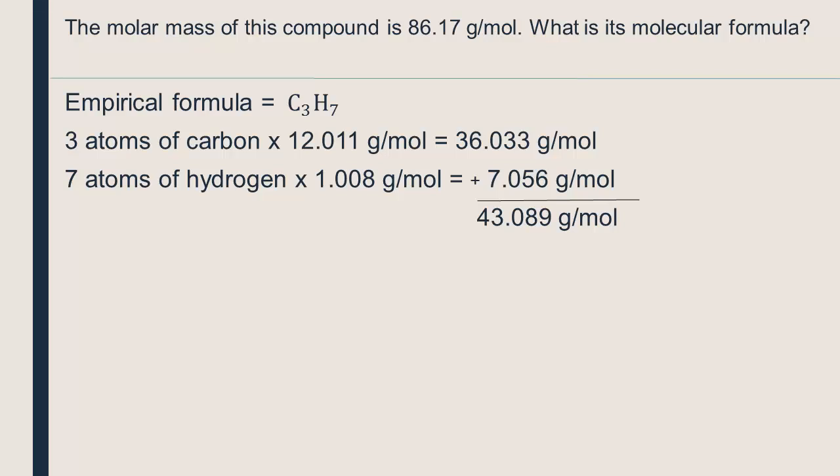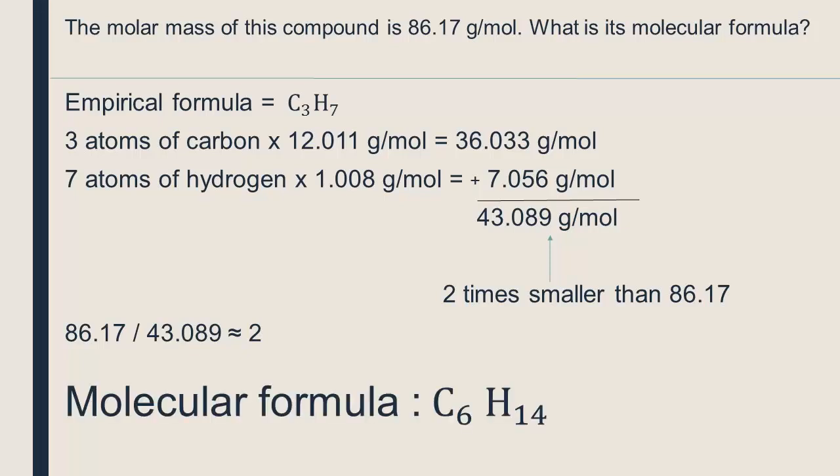Comparing the molar mass of our empirical formula to the real molar mass of the compound, we see that the real molar mass is 2 times bigger. If you don't see the relationship between the two right away, try dividing them. Now we just multiply our empirical formula by 2, and we find a molecular formula of C6H14.